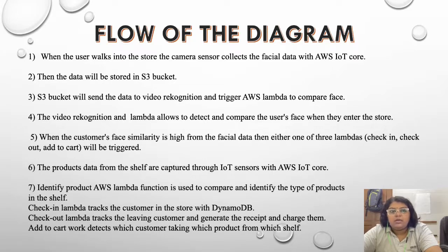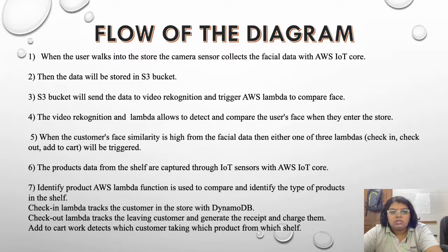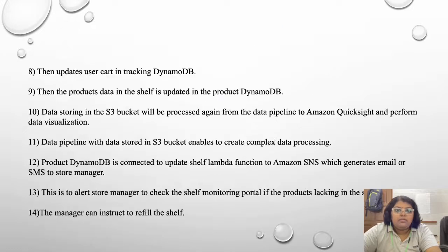The product data from the shelf is captured through IoT sensors with AWS IoT Core. The Identify Product AWS Lambda function is used to compare and identify the type of products on the shelf. Check-in Lambda tracks the customer in the store with DynamoDB. Checkout Lambda tracks the leaving customer and generates receipts and charges them. Add to Cart detects which customer is taking which product from which shelf, then updates the user's cart in the tracking DynamoDB, and the product data in the shelf is updated in the product DynamoDB.